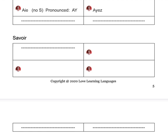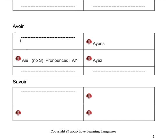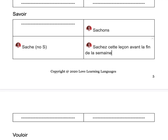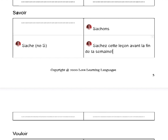The verb savoir means to know. In the tu form it's sache — no S. In the nous form: sachons. In the vous form: sachez. For example: 'sachez cette leçon avant la fin de la semaine' — know this lesson before the end of the week. It looks a lot like the subjunctive, but they're not spelled exactly the same, so be careful.